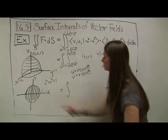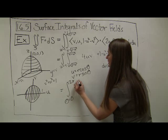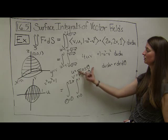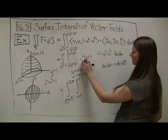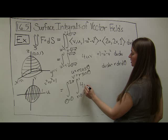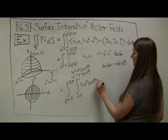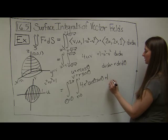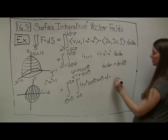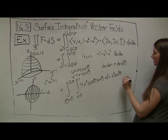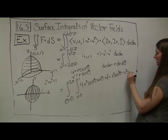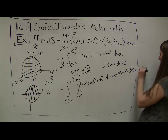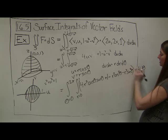For the coordinate transformation, let u = r cosθ and v = r sinθ, so dv du becomes r dr dθ. The bounds become nice: θ goes from 0 to 2π for a full circle, and r goes from 0 to 1. Now converting the integrand: the 4uv term becomes 4r² cosθ sinθ, since r sinθ · r cosθ = r² cosθ sinθ. And 1 - u² - v² becomes 1 - r² cos²θ - r² sin²θ, all multiplied by r dr dθ.